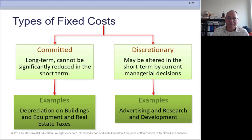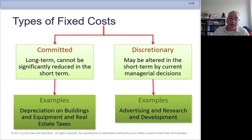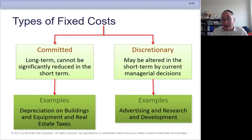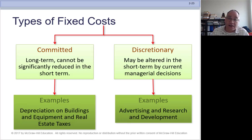We have two types of fixed costs: committed costs and discretionary costs. Committed costs are long-term — you've already spent the money and can't change them, like depreciation on a building or real estate taxes. As long as you own the building, you pay those taxes. Committed fixed costs are truly fixed; you cannot change them. Discretionary costs, on the other hand, can be changed — you may have the ability to cancel them or increase them — but just because they're discretionary doesn't mean they vary in proportion to volume.